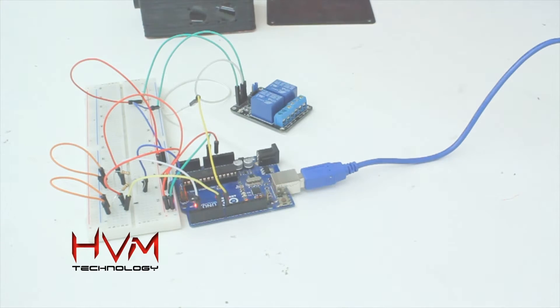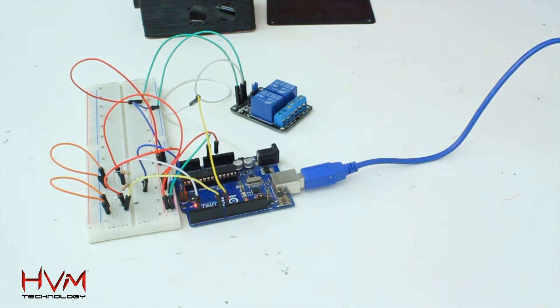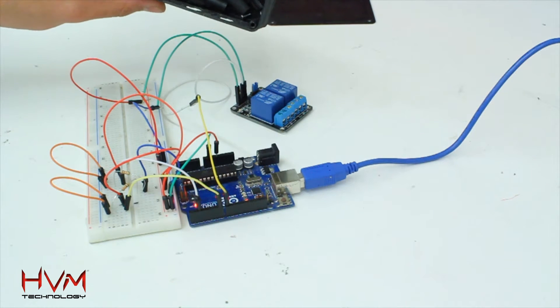This is part two of my JBC soldering station adapter build. Today we're going to be looking at the electronics that are going to fit inside this little box that I printed in the previous video.